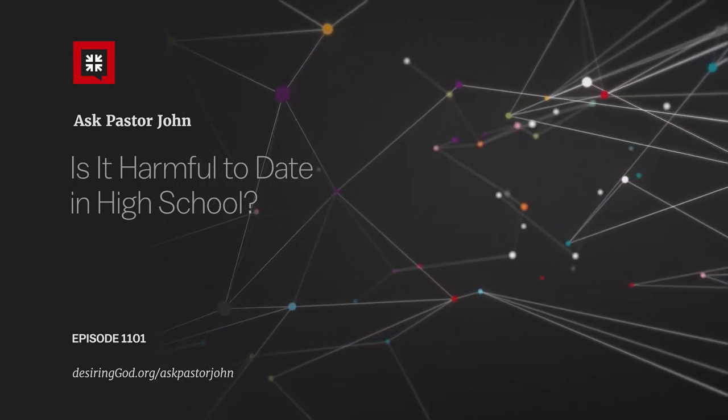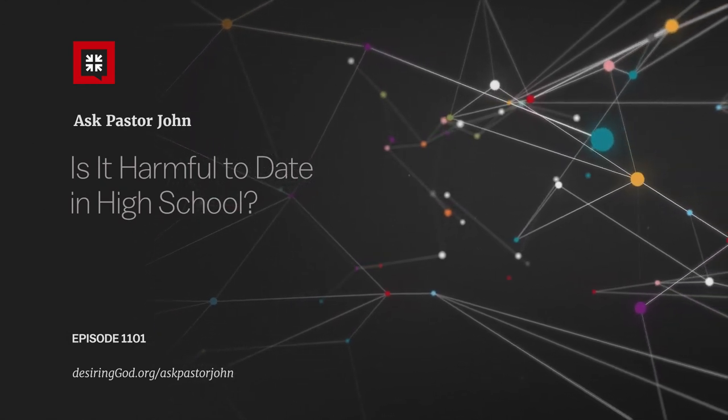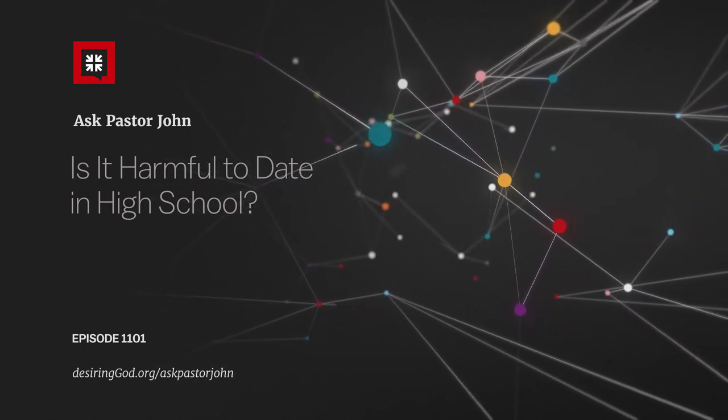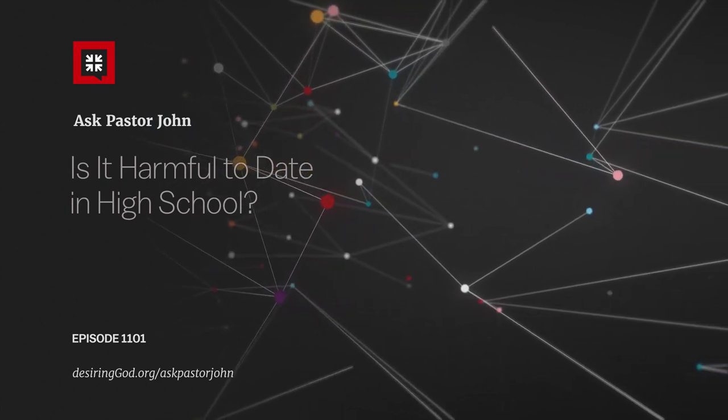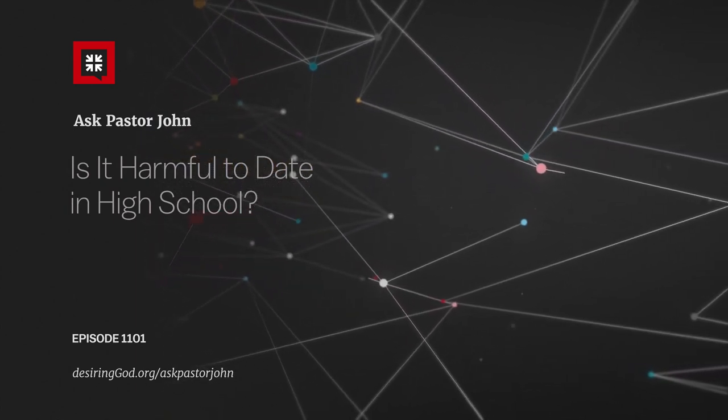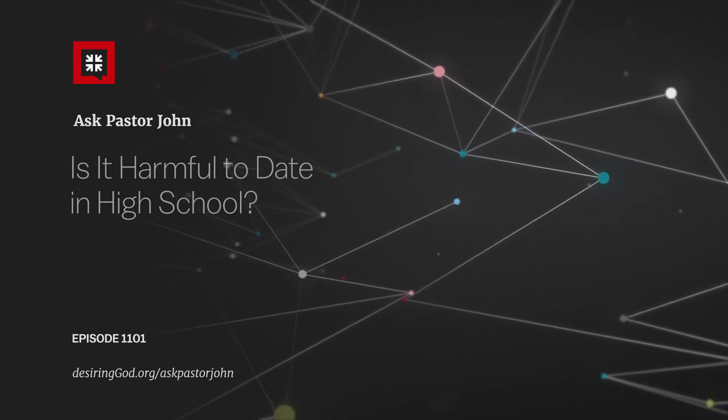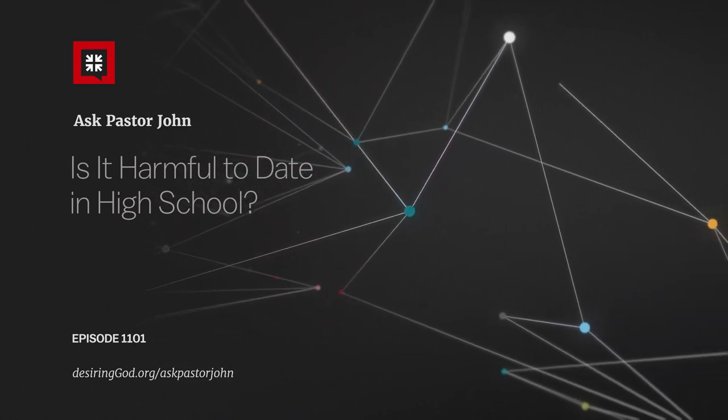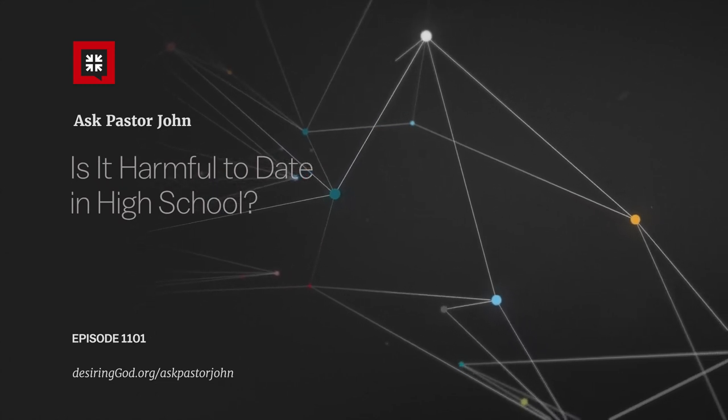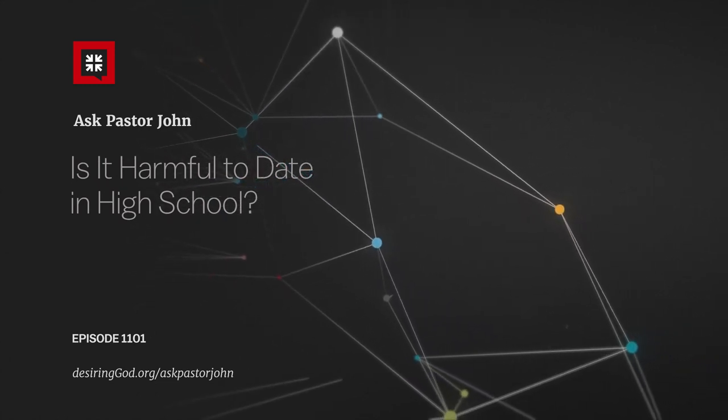Paul says in 1 Corinthians 7:2, because of the temptation to sexual immorality, each man should have his own wife and each woman her own husband. In other words, sexual relations are for the marriage covenant, not for the engaged couple and not for casual dating relationships.